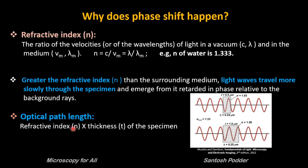This happens due to the optical path length of the specimen, which is the product of the refractive index and the thickness of the specimen. As shown in the image, one object has a higher refractive index than another, but both have the same optical path length difference due to a difference in thickness. So optical path length difference plays a vital role in phase retardation.